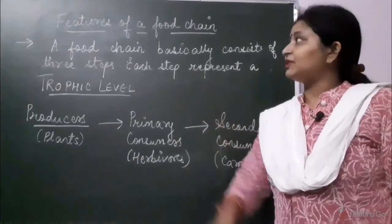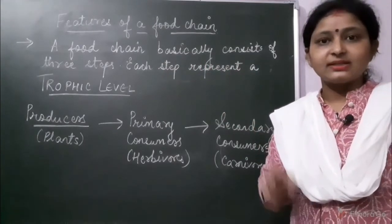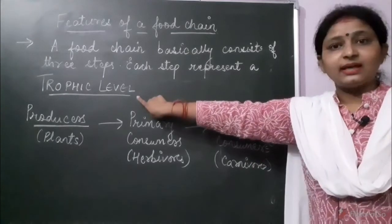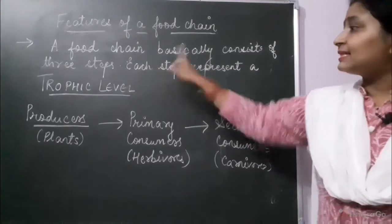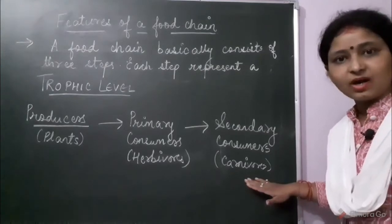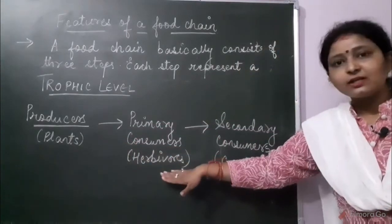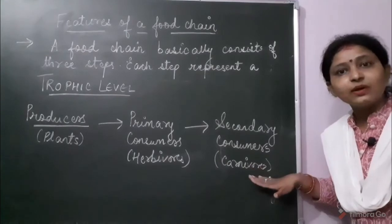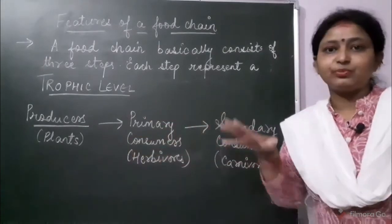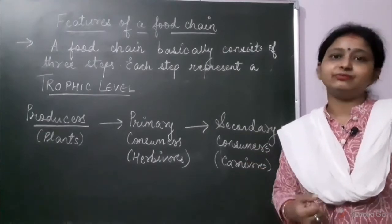Another feature of a food chain is that it basically consists of three steps, and each step represents a trophic level. Remember this new term — trophic level. These three steps are: producers, primary consumers, and secondary consumers. Each of these steps is a trophic level. There may be four to five trophic levels in a food chain.